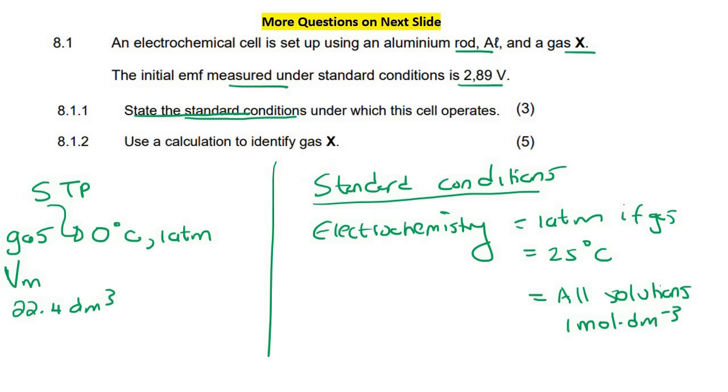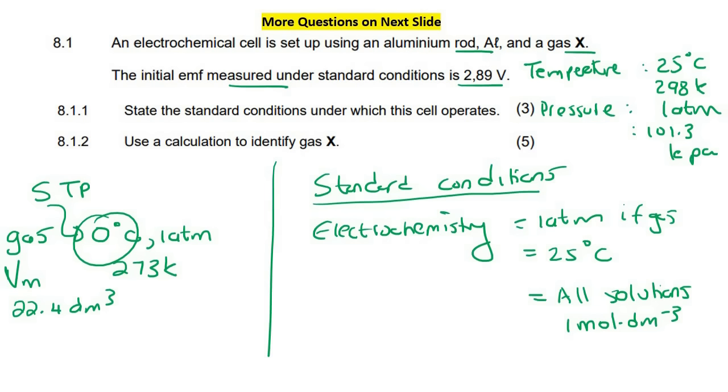So here they say state the standard conditions under which the cell operates. So when answering the question, just say that the temperature is going to be 25 degrees Celsius. You can also say 298 Kelvin. For the pressure, you can just say one atmosphere. Some people also say 101.3 kilopascals. That's also okay. And then concentration, you're going to say one mole per decimeter.